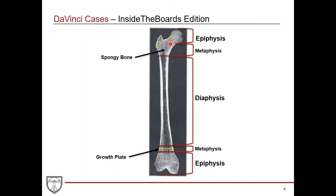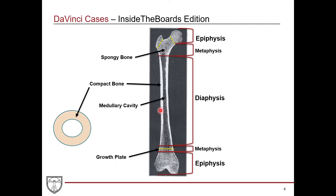Some other components: up in the proximal and distal ends you have spongy bone, which contains red marrow even in adults — that's where hematopoiesis occurs. Then you have compact bone, which is the very strong outer portion of the diaphysis. You also have the medullary cavity within, and in a cross-section of the diaphysis you can see the compact bone on the outside, the medullary cavity within, and the periosteum — the outer layer — which is important to keep in mind because it was mentioned in the x-ray findings. And then you have the endosteum, the inner portion of compact bone that juxtaposes the medullary cavity.